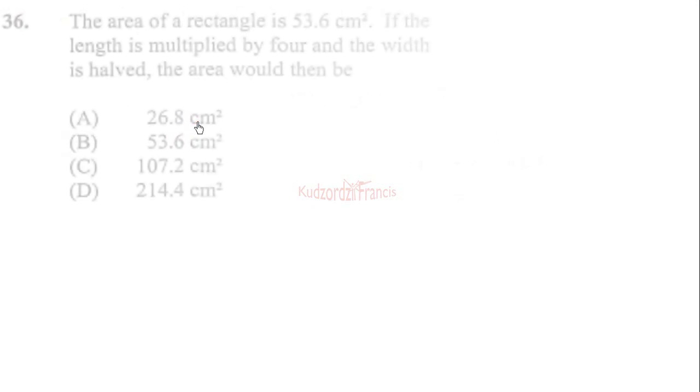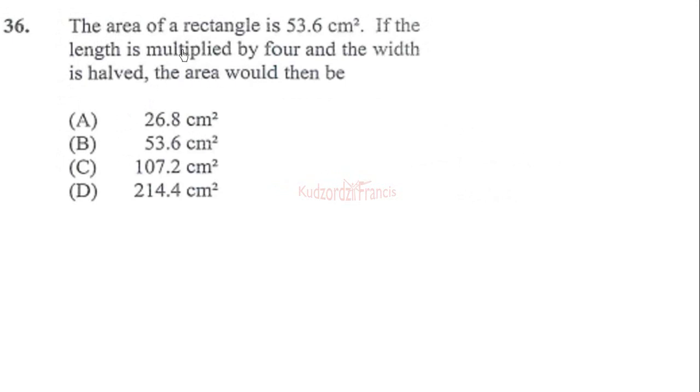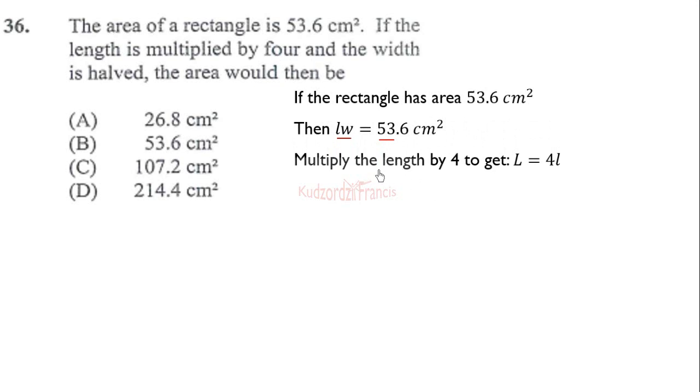Problem 36: the area of a rectangle is 53.6 square centimeters. The length is multiplied by 4 and the width is halved. What would the area then be? Initially, the rectangle has an area of 53.6. We know area of a rectangle is length times width equals this value. If the length is multiplied by 4, then the new length is 4 times the old length. The width is halved, so the new width is half the old width.